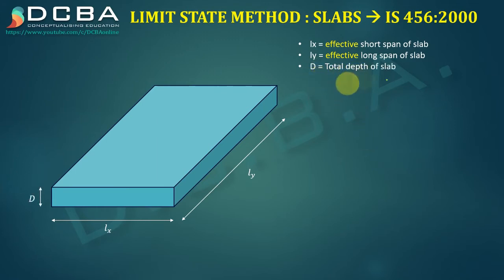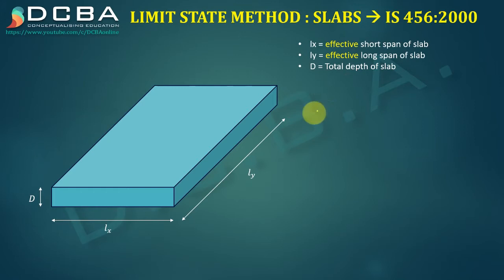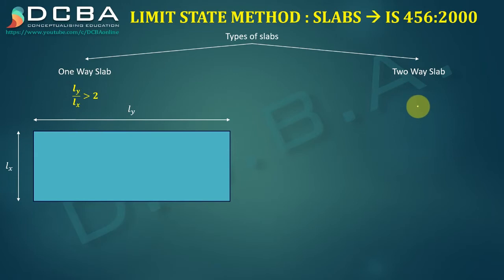Capital D is the total depth of the slab, and d is the effective depth of the slab. These are the key parameters required for our design.